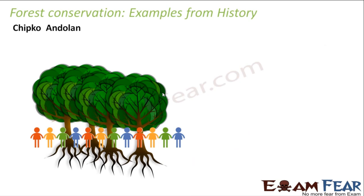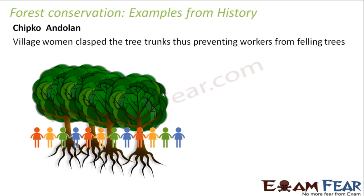Another popular movement was the Chipko Andolan. The word 'Chipko' is a Hindi word meaning to stick to something. When people came to cut down trees in a forest, the men of the village were not present. So the women of the village clasped the tree trunks, preventing the workers from felling the trees. Since everyone stuck themselves to the trees, this movement became known as Chipko Andolan — a very popular and motivating example of forest conservation from history.